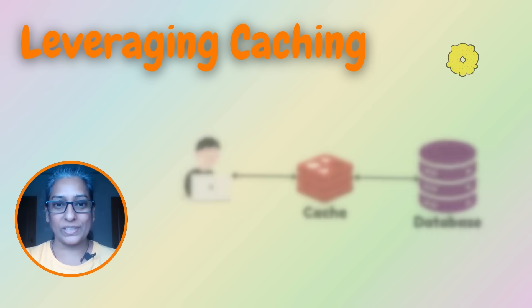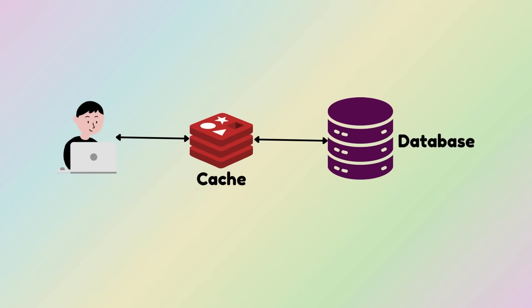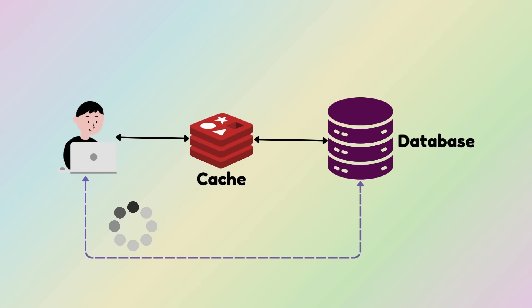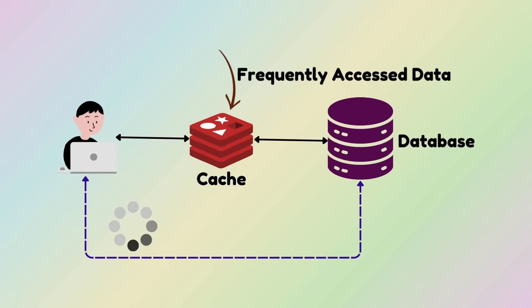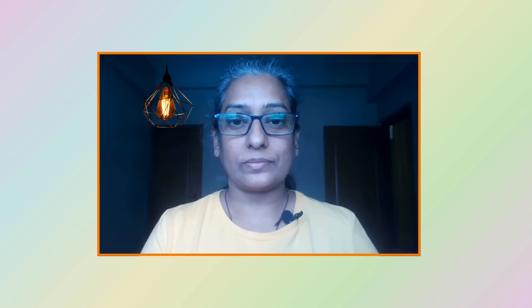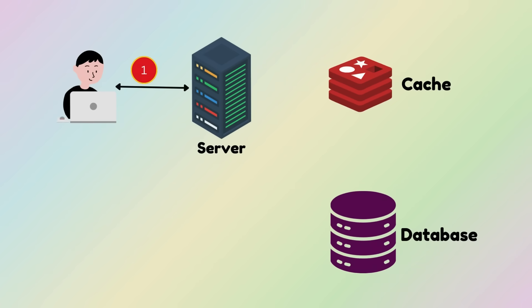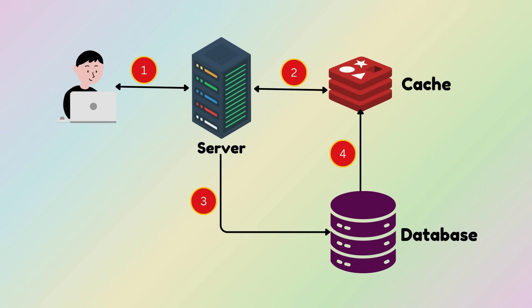Let's bring in some speed with caching. Caching can mitigate the performance issues of direct database queries by storing frequently accessed data in a fast temporary storage layer, reducing the need to hit the database repeatedly. When a user tries to create an account, the system first checks the cache to see if the username or email already exists. If the data is not found in the cache — that is a cache miss — the system queries the database, and the result is then stored in the cache for future requests.